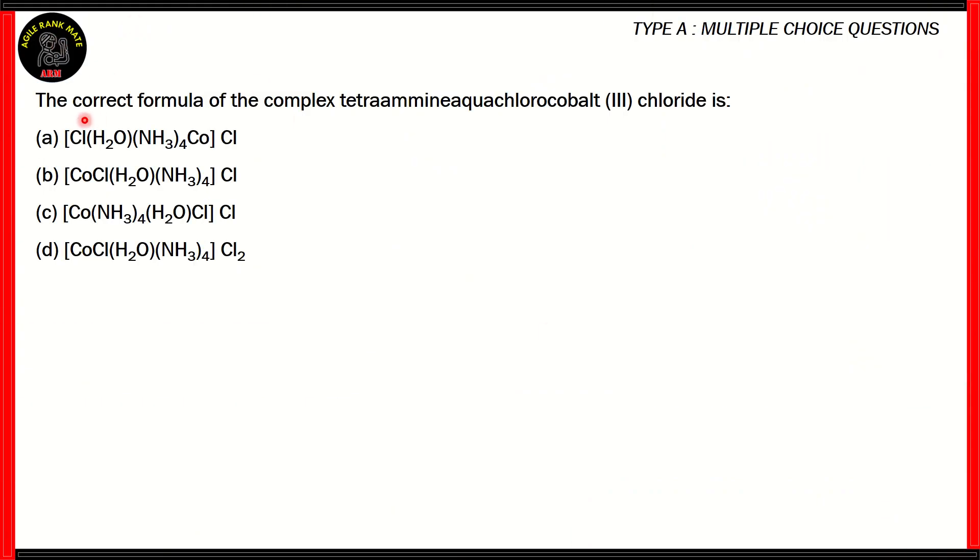Today's first question is, the correct formula of the complex tetraamine aqua chloro cobalt 3 chloride is one of the four options. So how do we solve this question? Well, the first thing to note here is that the name tetraamine aqua chloro cobalt 3 chloride indicates that the charge of cobalt would be 3.